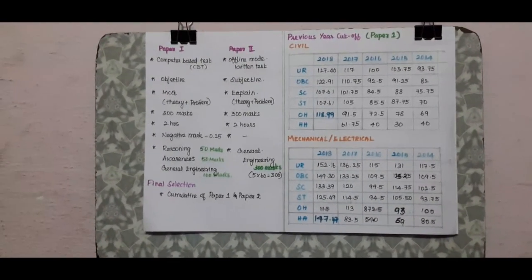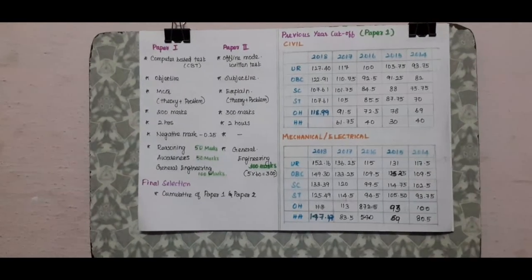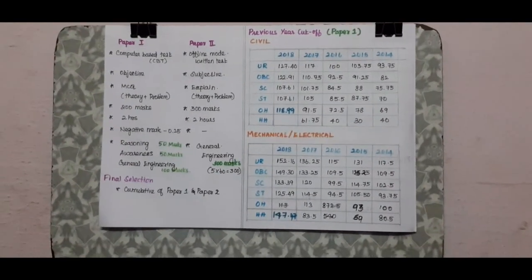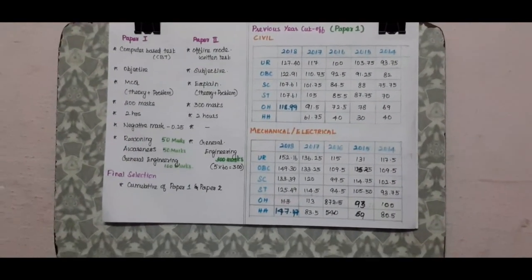Comparing year by year, the cutoff increases by about 10 marks each year. Comparing mechanical and electrical, the cutoff tends to be higher.